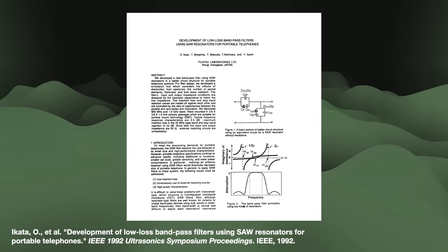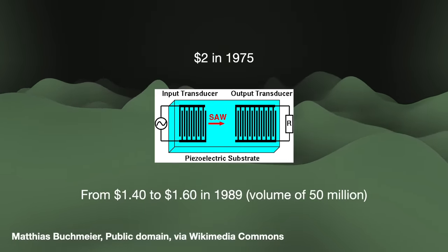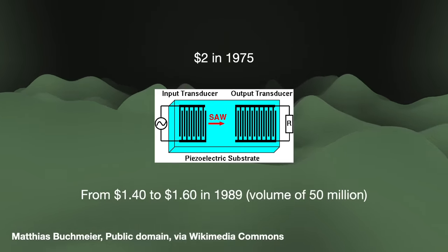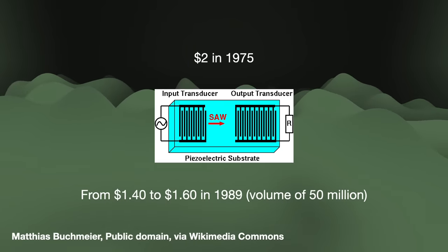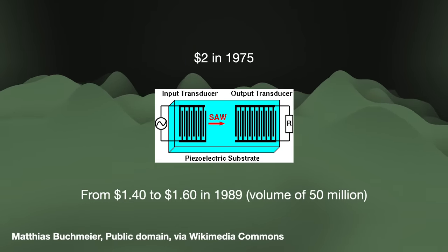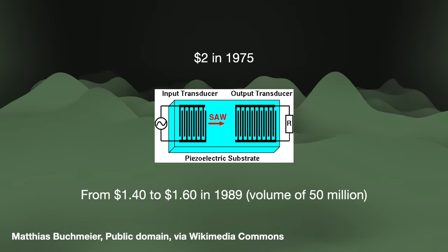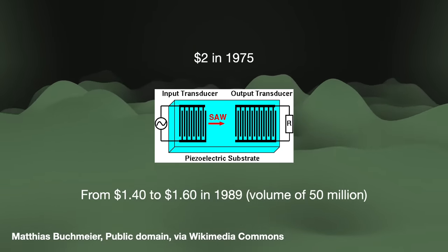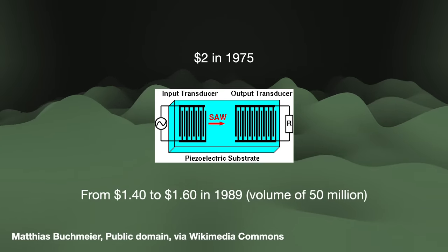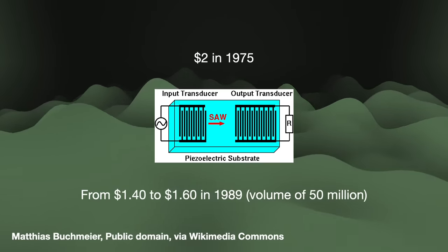Even back in 1975, SAW filters were estimated to cost like $2 each. Nearly 15 years later, each filter cost between $1.40 and $1.60 when bought in volumes of 50 million units. You can fill a bucket with these filters for more than what the bucket cost — that is kind of remarkable, though I feel empathy for the poor MEMS fab.